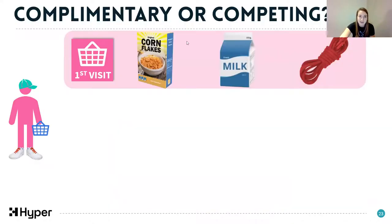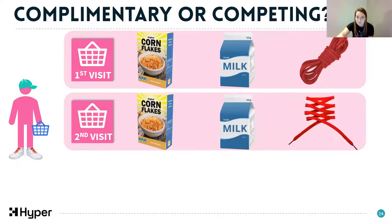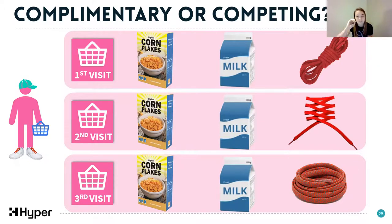Here's an example on a small scale with Hyper Harry, who represents our full customer base. In his first visit, he buys unbranded cornflakes, unbranded milk, and one variety of red shoelace. In his second visit, he buys the same cornflakes and milk but a different type of red shoelace. In his third visit, again cornflakes, milk, and a third variety of red shoelace. From these three visits we can infer that the cornflakes and milk are complementary, while the three types of shoelace compete against each other - demand could be transferred between them.